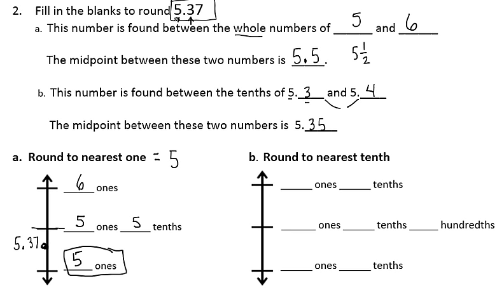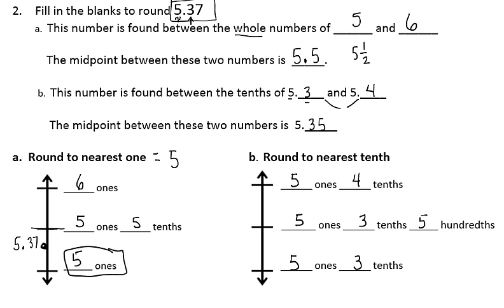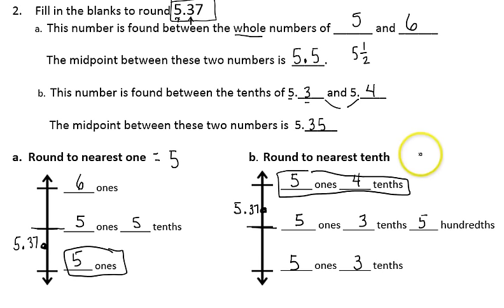Now let's round it to the nearest tenth. The number falls between 5 ones and 3 tenths, and 5 ones and 4 tenths. The midpoint is 5 ones, 3 tenths, and 5 hundredths. The number has 5 ones, 3 tenths, but 7 hundredths — so it would be plotted above the midpoint. Since it's above the midpoint, it would round up. So when I take my original number and round it to the nearest tenth, it rounds to 5 ones and 4 tenths.